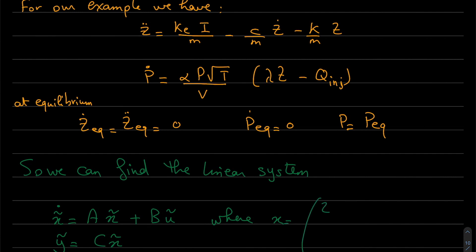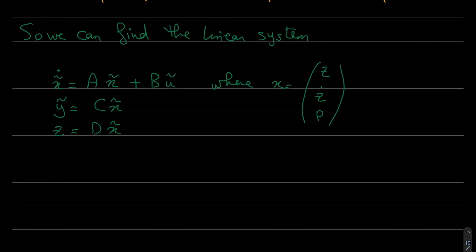The states that we are using are the position z, its variation z_dot, and the pressure. The small variations x_delta is z minus z_equilibrium, z_dot minus z_dot_equilibrium, p minus p_equilibrium. And remember that the input here is u.